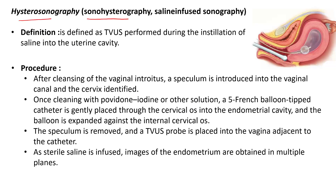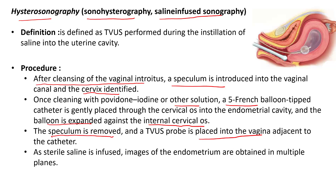Hysterosonography, also known as sonohysterography or saline infusion sonography, is defined as a transvaginal ultrasound performed during the instillation of saline into the uterine cavity. After cleansing of the vaginal introitus, a speculum is introduced into the vaginal canal and the cervix identified. Once cleaned with Betadine iodine or other solution, a 5-French balloon-tipped catheter is gently placed through the cervical os into the endometrial cavity, and the balloon is expanded against the internal cervical os. The speculum is removed, the transvaginal ultrasound probe is placed into the vagina against the catheter, sterile saline is infused, and images of the endometrium are obtained in multiple planes.